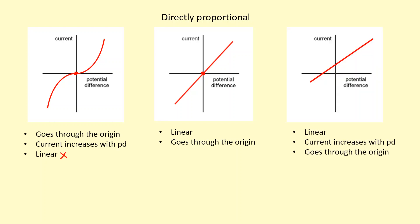Another example here is this linear straight line. And as potential difference increases, the current also increases. However, it doesn't go through the origin (0, 0). So therefore, as one thing doubles, the other one doesn't necessarily have to double. So that is not directly proportional either.